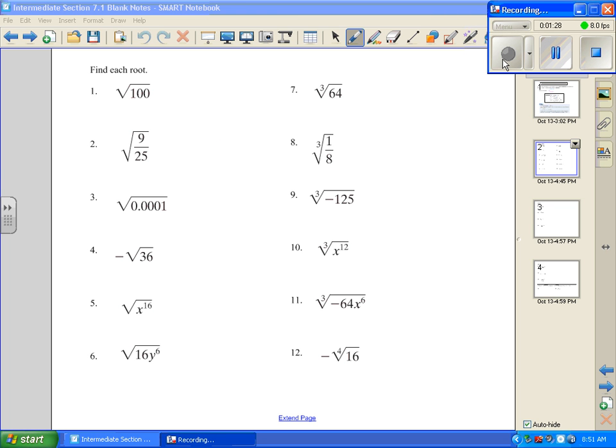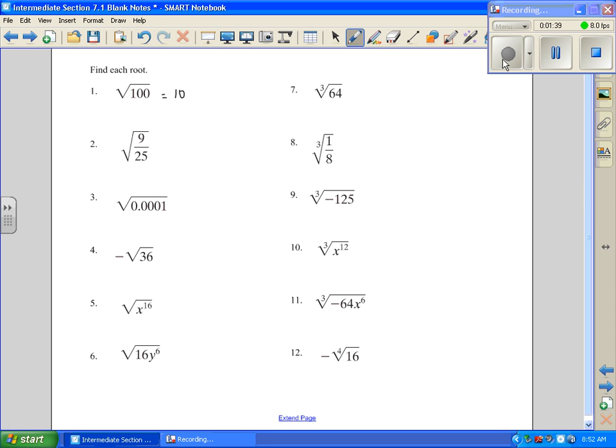Number one, we're going to start working some of these examples. And afterwards, I'm going to show you how to put some of these in the calculator. But first, the square root of 100 is 10 because 10 squared equals the radicand. Number two is going to be 3 fifths because 3 fifths squared is going to equal 9 25ths. And then number three, we're going to have 1 1 hundredths because if I square that, I will get the radicand.